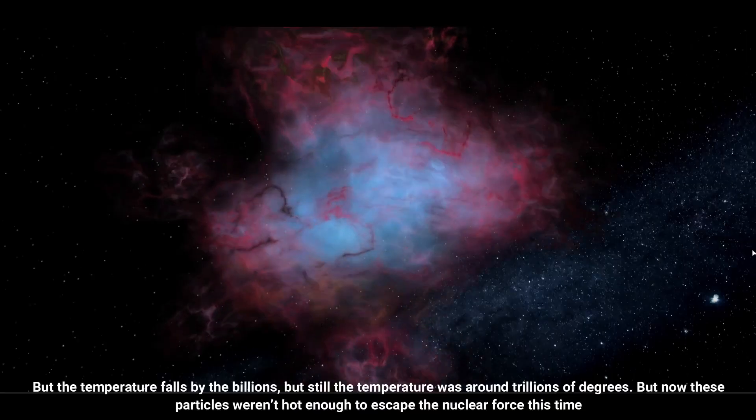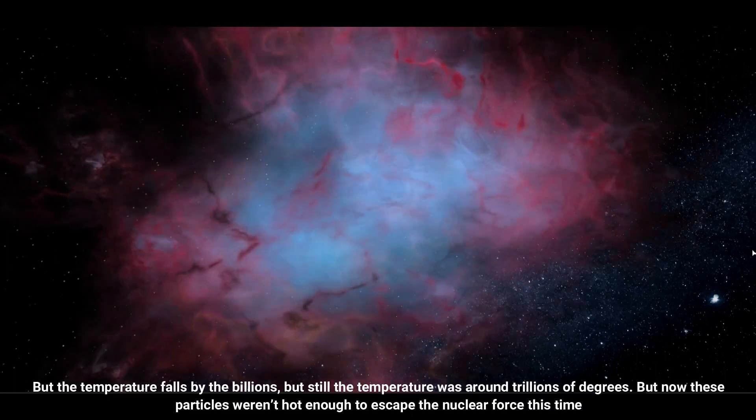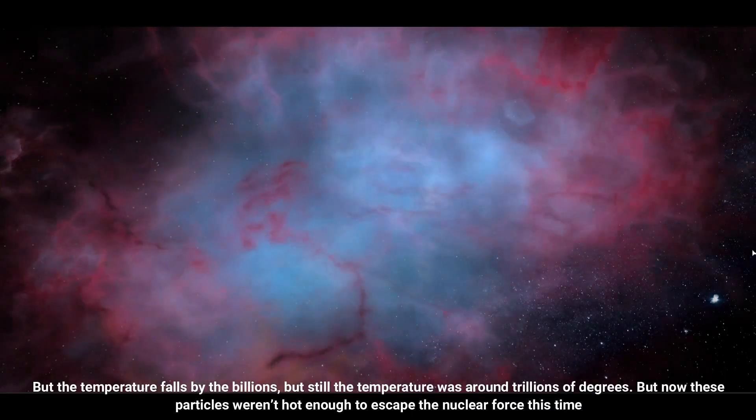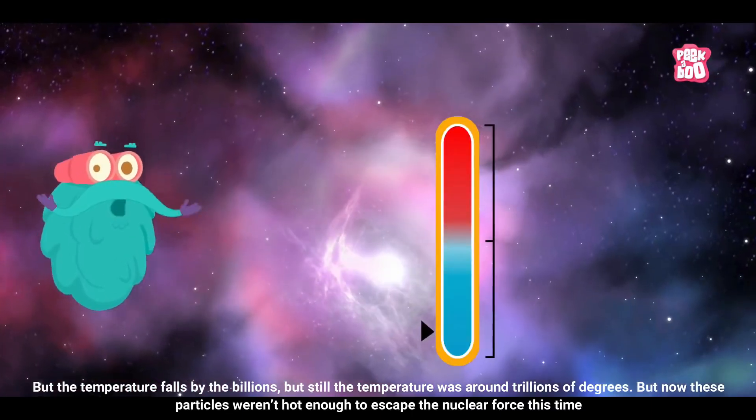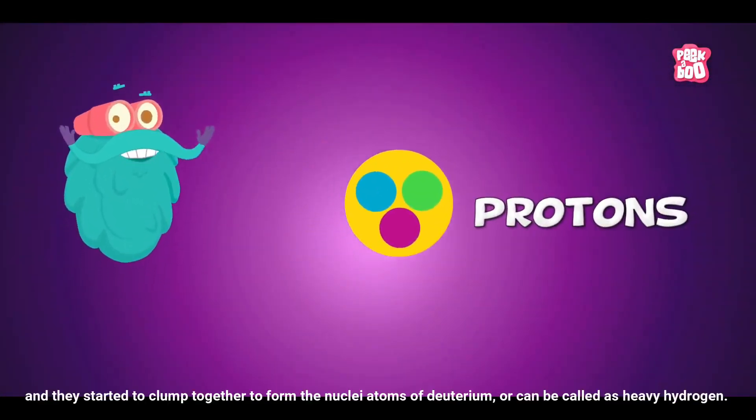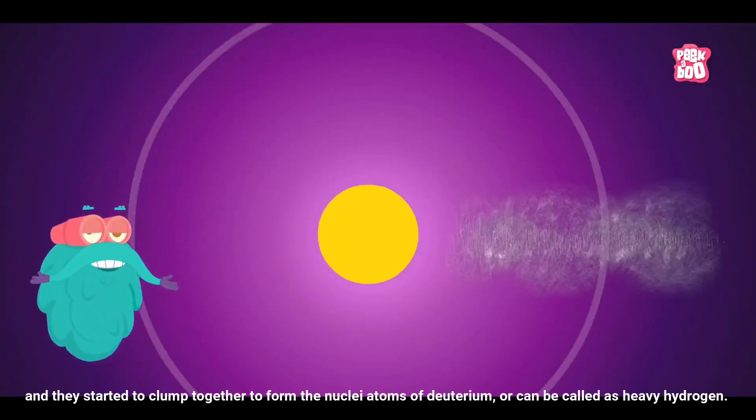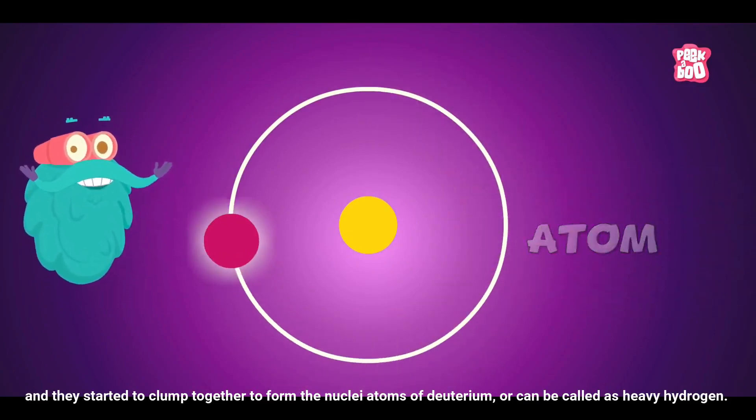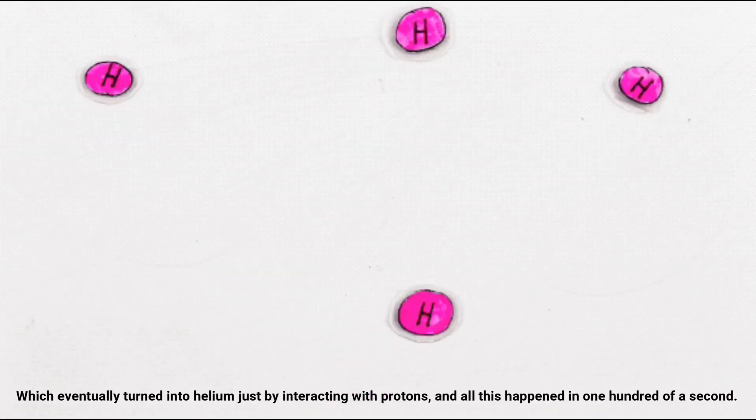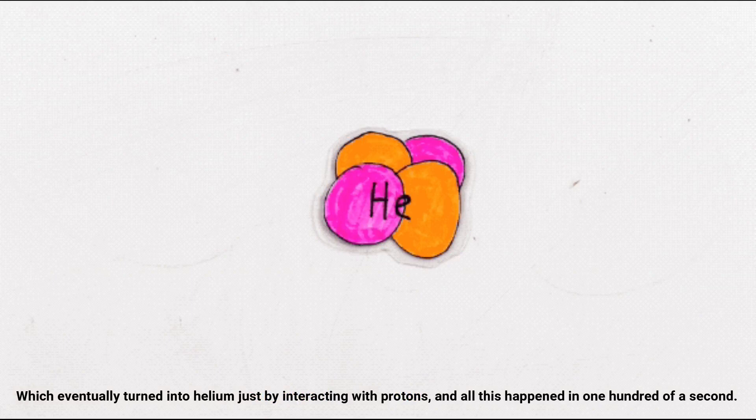But the temperature falls by the billions, but still the temperature was around trillions of degrees. But now these particles weren't hot enough to escape the force this time, and they started to clump together to form the nuclei of atoms of deuterium, or can be called heavy hydrogen, which eventually turned into helium just by interacting with protons. And all this happened in one-hundredth of a second.